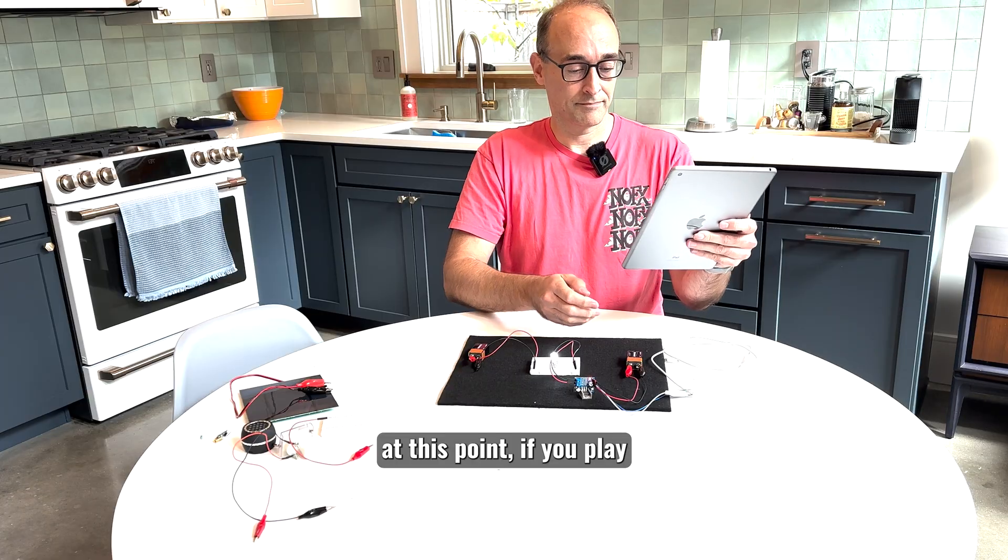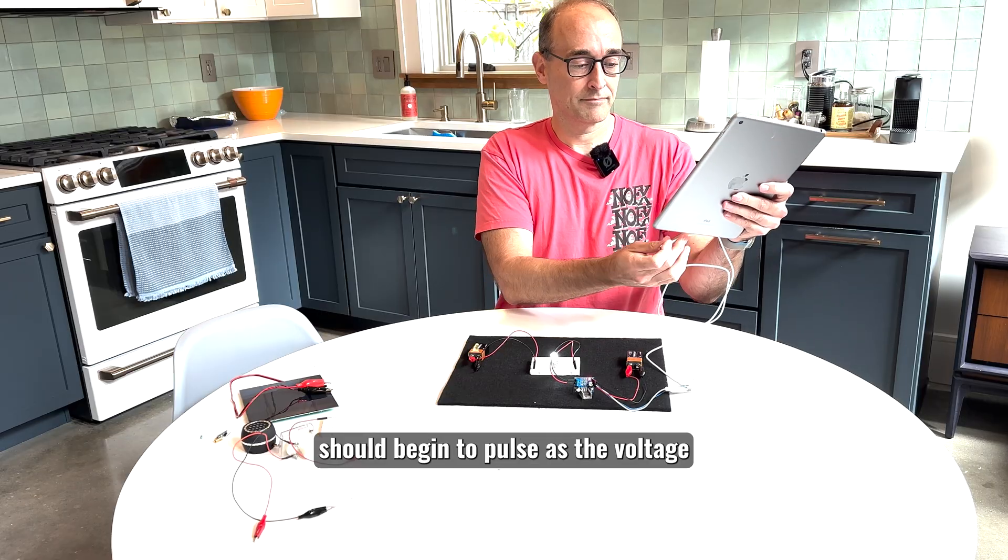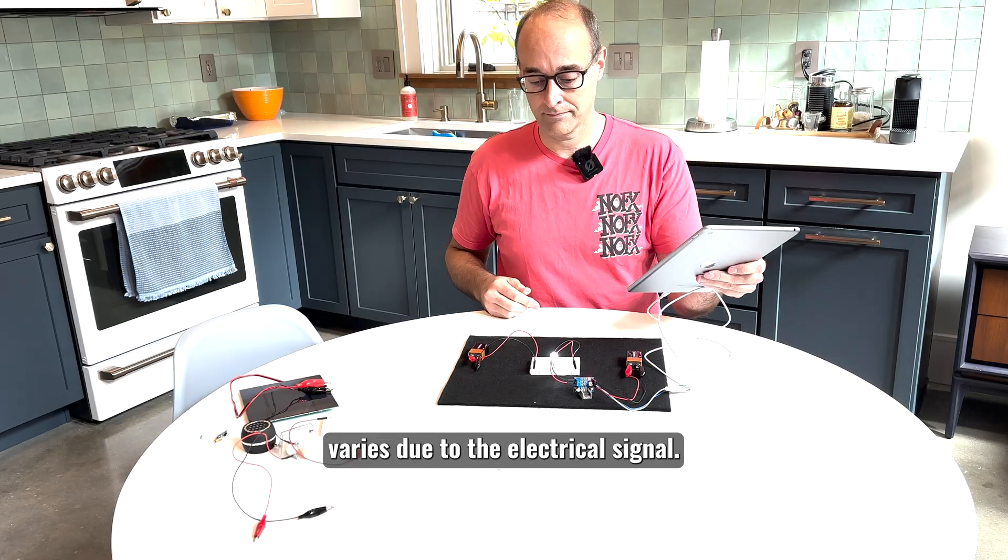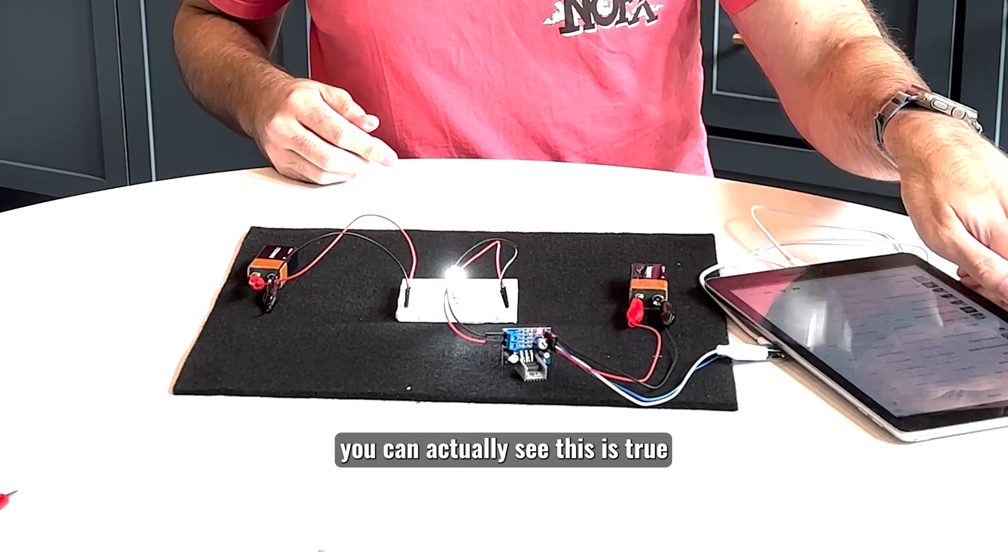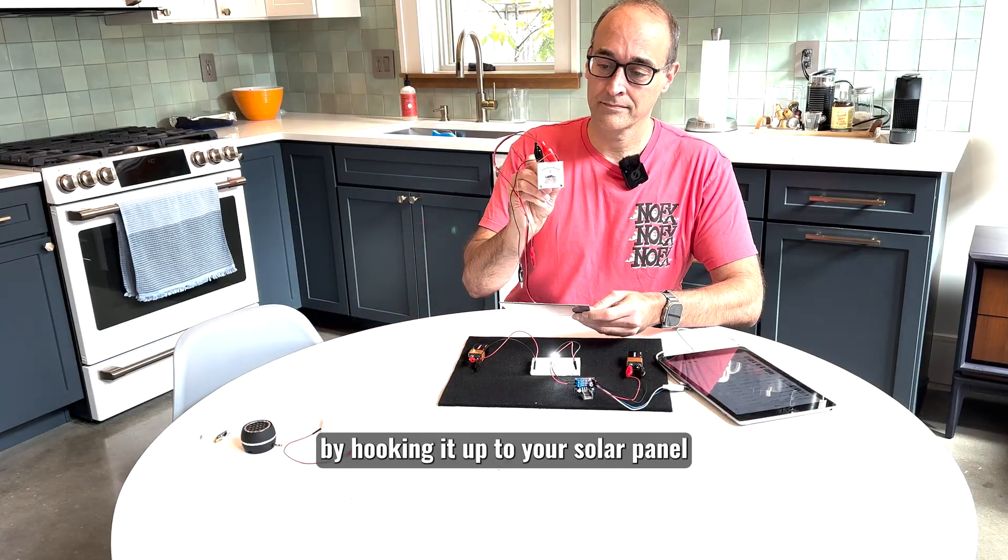At this point, if you play a song and plug in the cord, the LED should begin to pulse as the voltage varies due to the electrical signal. And if you happen to have a voltmeter handy, you can actually see this is true by hooking it up to your solar panel and pointing it at the light.